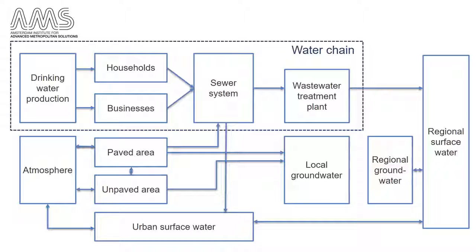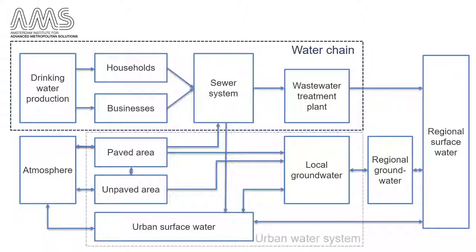The groundwater is either used by vegetation for evaporation or it drains into the local surface water. In some cases, it is just the other way around: upward seepage of the regional groundwater system goes to the local groundwater system and feeds the urban water system. This is what we call the urban water system or the small urban water system. As you can see, urban water creates a complex network of pathways. Depending on the design of the urban infrastructure, storm water and drinking water go their own way and support or hinder the life in the urban environment.